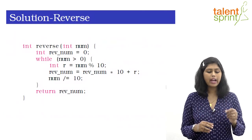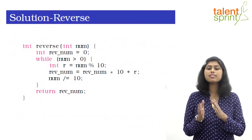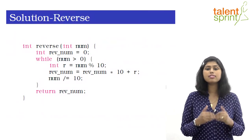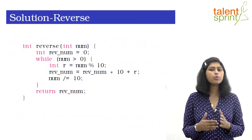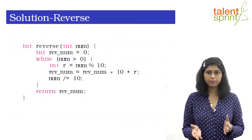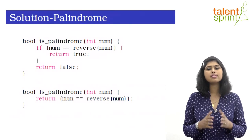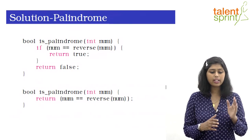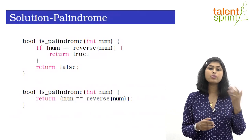First, we have created a 'reverse' function which takes a number as input and returns the reversed number. In this function we have included the while loop to reverse the number. Second, we have written a 'palindrome' function which takes a number as input. Here it will check the given number with the reversed number returned by the reverse function.